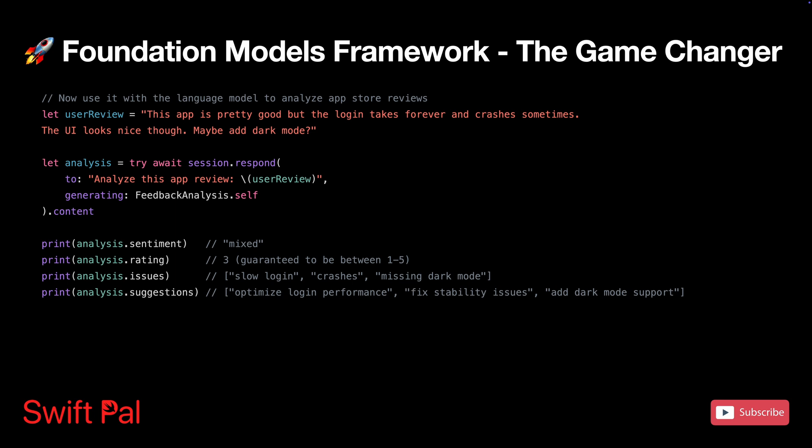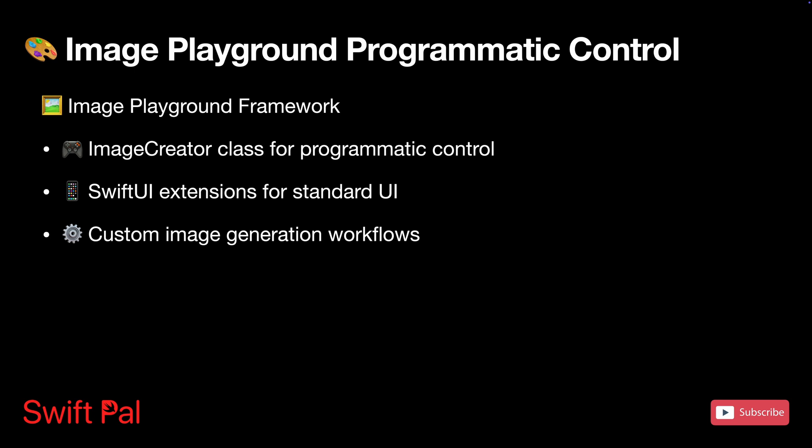But structured text is just the beginning. Apple also gave us programmatic control over image generation, and the possibilities for dynamic visual content are massive. Apple Intelligence has image generation capability built into the system, and up until recently you were stuck with whatever UI Apple provided. iOS 18.4 introduced the `ImageCreator` class, and this changes the game quite a bit.